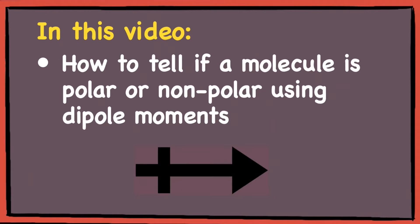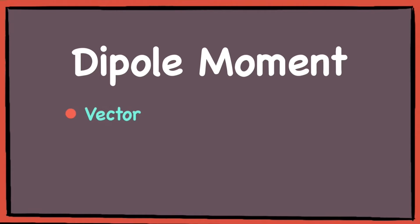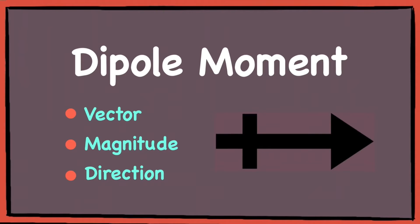How to tell if a molecule is polar or non-polar using dipole moments. A dipole moment is a vector which has a magnitude, direction, and is represented by this arrow symbol.